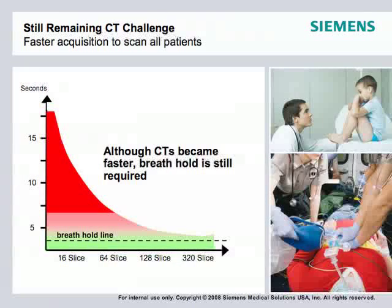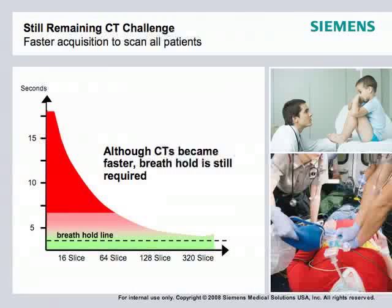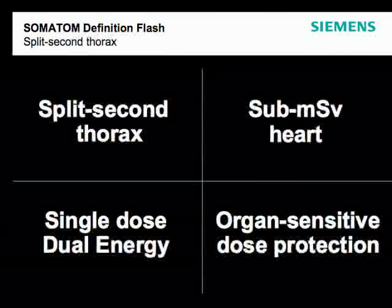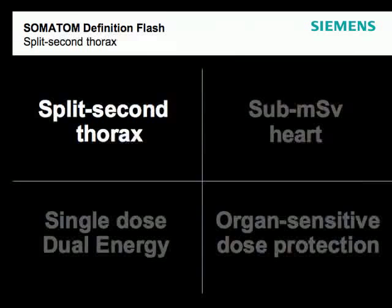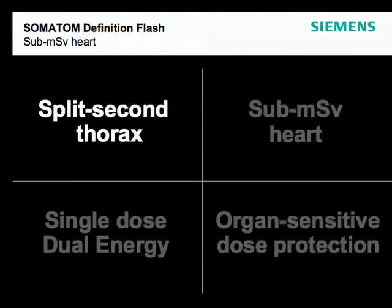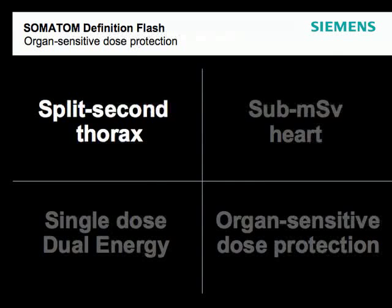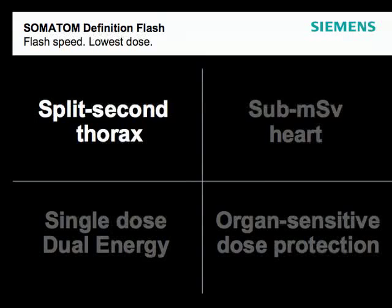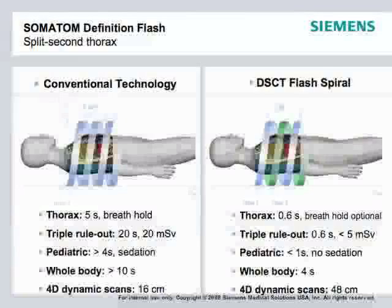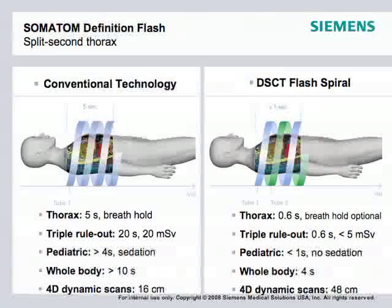Being able to get below the breath-hold line has been a goal as technology develops. For the first time, we're able to achieve a split-second thorax — scanning so rapidly that it can be done without breath hold. Conventional technology can scan an entire chest in about five seconds, but patients with COPD or others who can't hold their breath present a challenge. We can make breath hold optional at 0.6 seconds with split-second thorax.